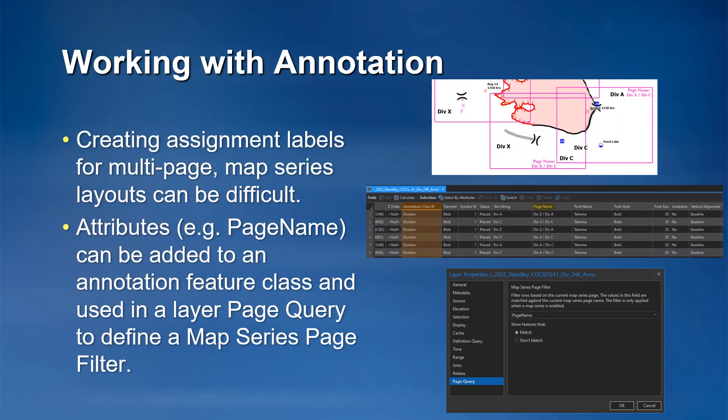Creating assignment labels for multi-page map series layouts can be challenging, especially in situations where index pages span multiple assignments or split assignment areas. In these cases, an attribute such as page name can be added to an annotation feature class, and single annotation features can be set up to display or not on certain map series pages using map series page filter sets on the page query tab of the annotation layer properties.